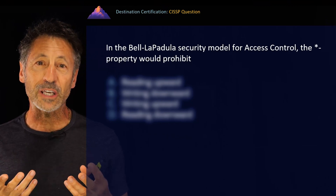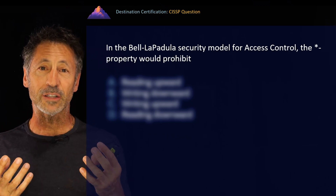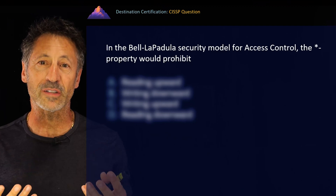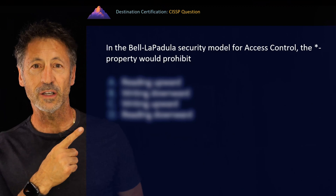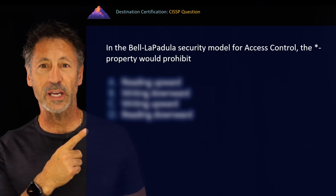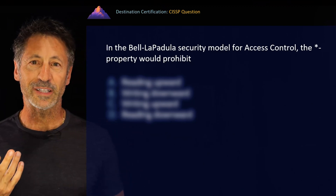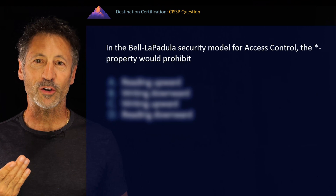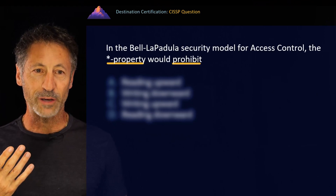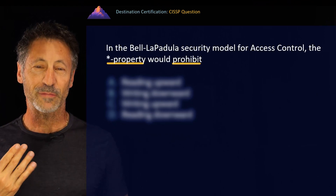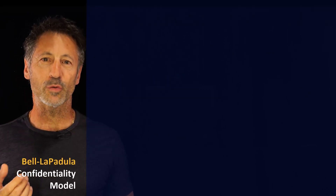The only way to prevent this is to hide the answers first, understand the question, and pick out the correct key words that exist in every single question before we let ourselves view the answers. Think of the key words as the antidote to being poisoned by the wrong answers. The major key words in this question are "star property" and "prohibit." To know the answer, we need to understand the Bell-LaPadula model.